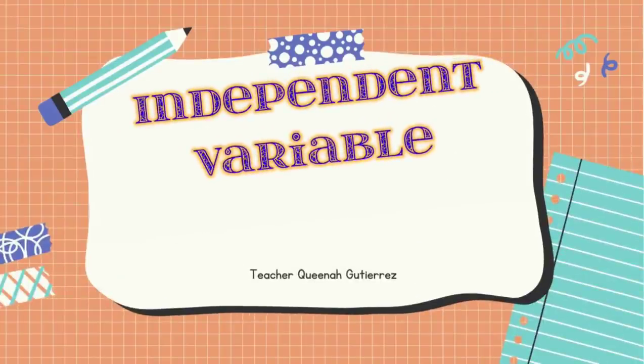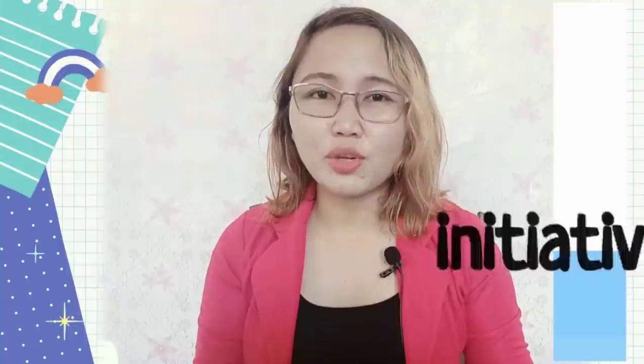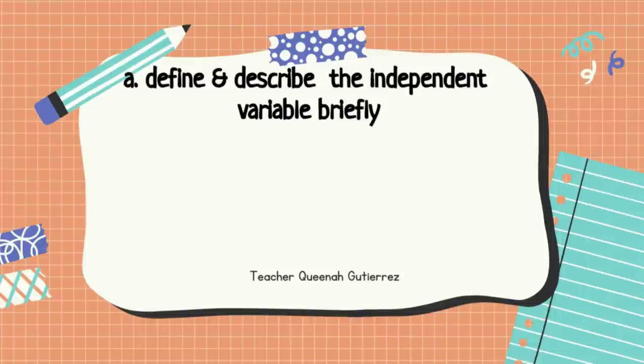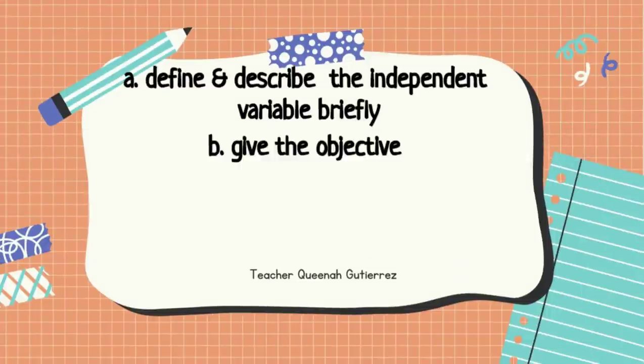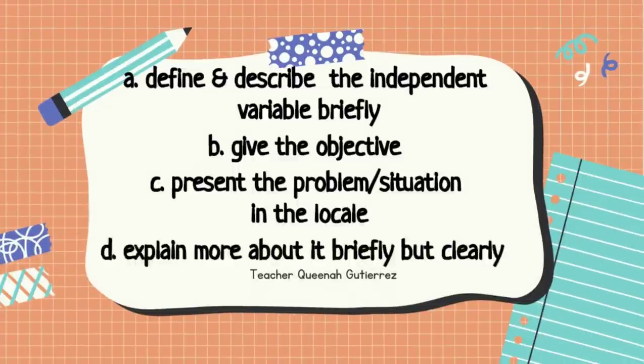Fourth, you need to present your independent variable — that is, the intervention, the action, the initiatives, or the program that you are making your research into. Here you need to define and describe your independent variable briefly, give the objective, present the problem or the situation in the local, and explain more about it briefly but clearly. Here is the sample.